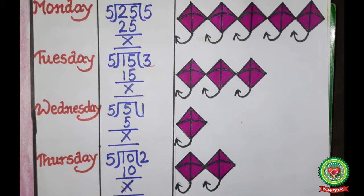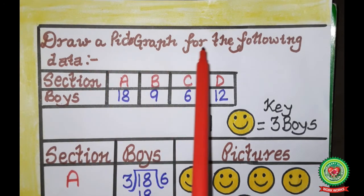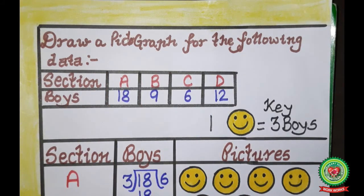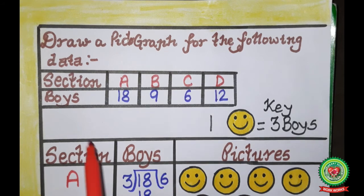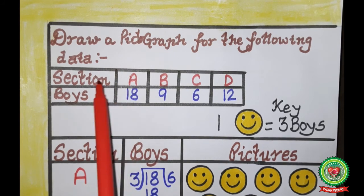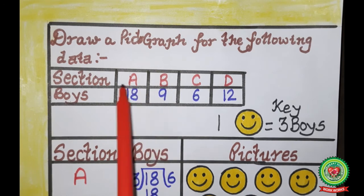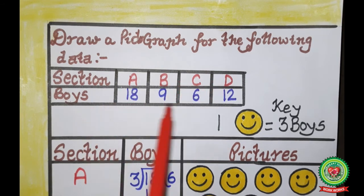Let's take one more example. Example number 2: draw a pictograph for the following data. Sections A, B, C and D are given. Section A has 18 boys, section B has 9 boys, section C has 6 boys, and section D has 12 boys.